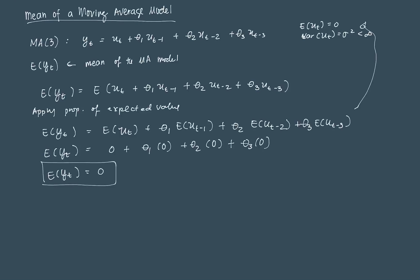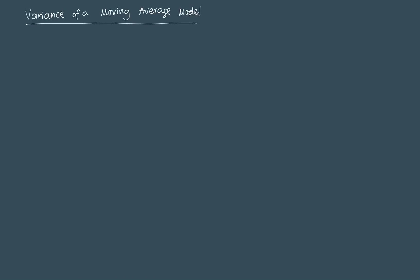So we're left with E[Yt] = 0. And that's the mean of a moving average model or a moving average process. Since we have the mean already, we can calculate the variance. So let's now move on to the variance. To calculate the variance of a moving average model, we remember from statistics that Var(Yt) = E[(Yt - E[Yt])(Yt - E[Yt])].